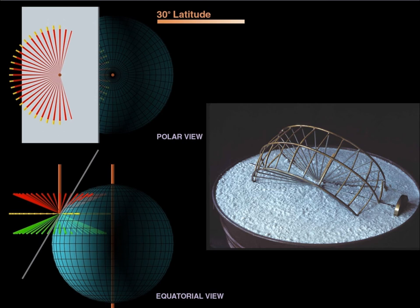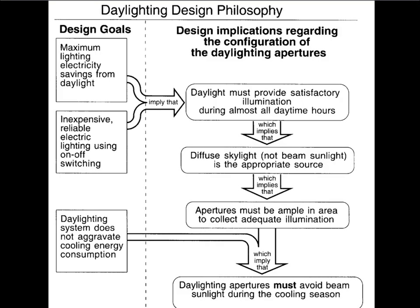Another thing you've learned has to do with sun angles, and we've used that knowledge to come up with some conclusions about how we should orient glazing. The aperture should be ample in area to collect adequate diffuse skylight — diffuse skylight is our source, not beam sunlight. Therefore the daylighting apertures should be oriented and protected to avoid beam sunlight during the cooling season, and it's not a bad idea to admit it during the heating season as a way of offsetting some of the heating loads.